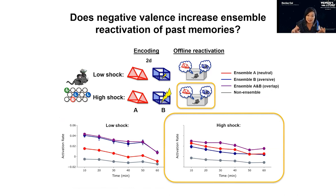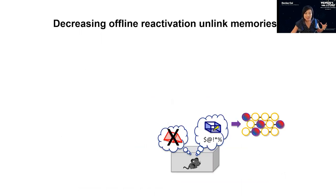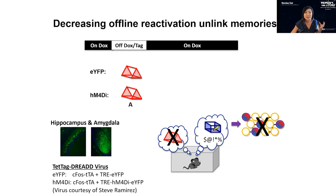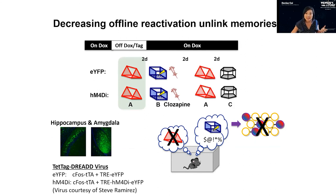We then asked: if reactivation of both the red and blue box ensembles is key, can we selectively silence the red box ensemble during that offline period to eliminate memory linking? We collaborated with Steve Ramirez using their activity-dependent DREADD virus to selectively tag cells active in hippocampus and amygdala during learning of the red box. After animals entered the blue box and received a shock, we injected clozapine to selectively silence the red box ensemble, then tested whether fear transfer was blocked.